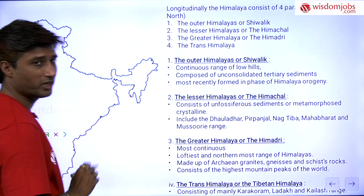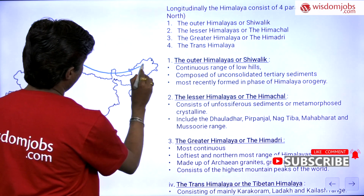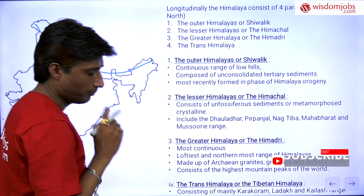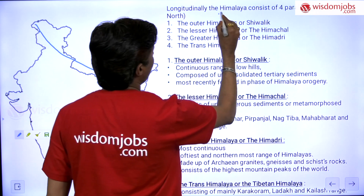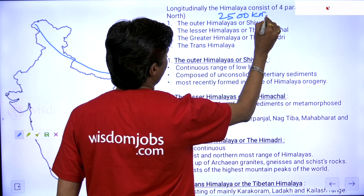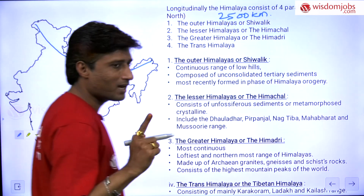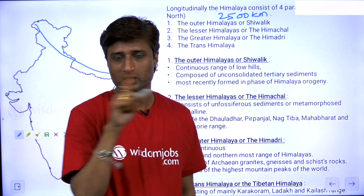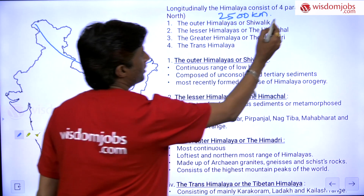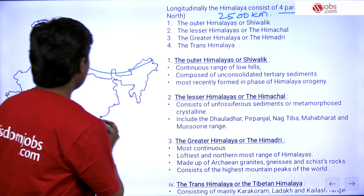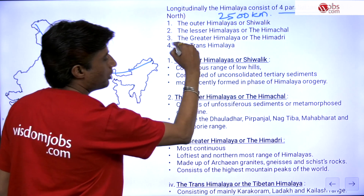As I told you in the previous video, the Himalaya has been stretched from Jammu Kashmir till Arunachal Pradesh. Longitudinally, the Himalaya spreads near about 2500 kilometers. Now, it is not a single range — you should keep that in mind. It actually consists of four different parallel ranges which run from south to north.